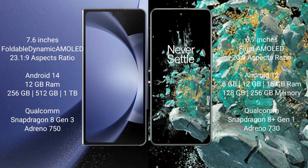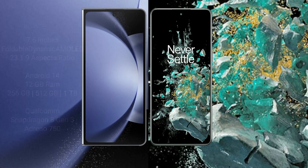Samsung Galaxy Z Fold 6 comes with 12GB RAM and 256GB, 512GB, or 1TB internal storage, Qualcomm Snapdragon 8 Gen 3 processor and Adreno 550 GPU. OnePlus 10T comes with 8GB, 12GB, or 16GB RAM and 128GB or 256GB internal storage, Qualcomm Snapdragon 8 Gen 1 processor and Adreno 730 GPU.